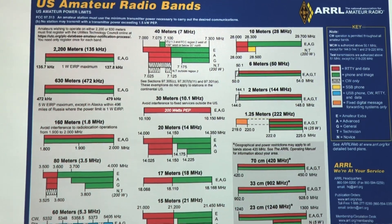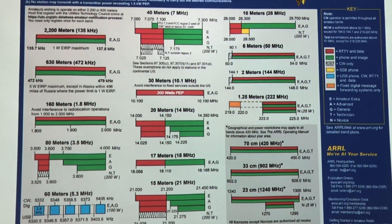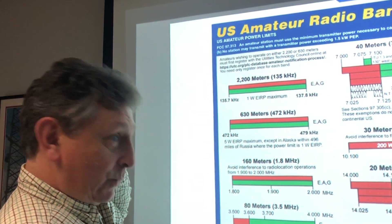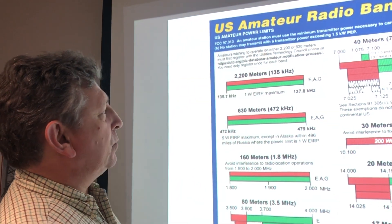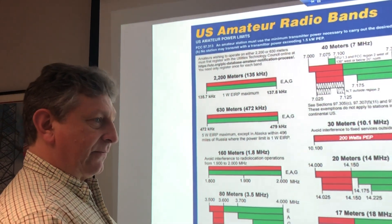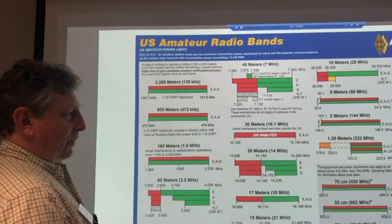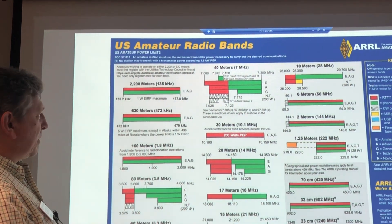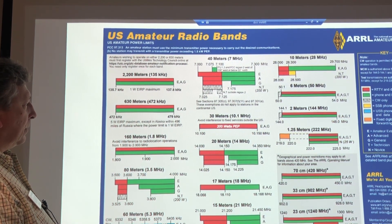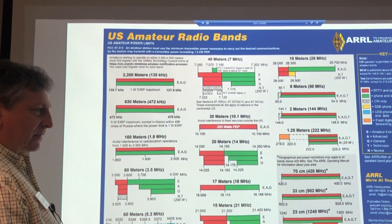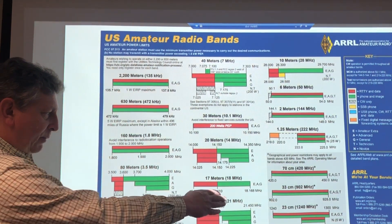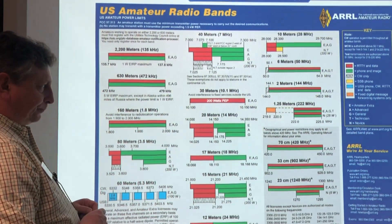We'll start off with the more obscure bands. The 2200-meter band is a new allocation at 135 kilohertz that almost nobody can use because it's very difficult to get equipment working on that frequency. Likewise, the 630-meter band at 472 kilohertz is also a new allocation with very low power allowances — one watt effective radiated power — really for experimenters, much like the microwave bands above 1300 megahertz.